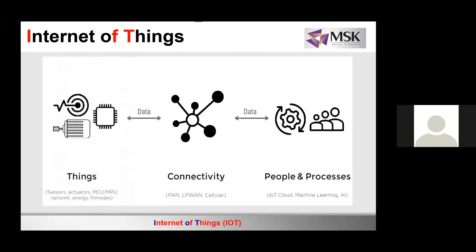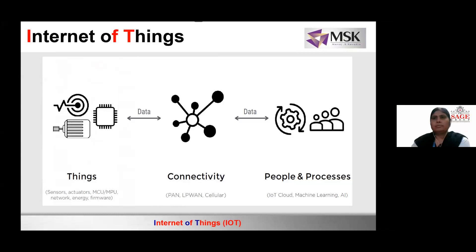There are things, there should be connectivity, and there should be some people or process. It's not only that it should work with people — it can work with software, it can work with machines, it can work with apps, anything. That is what is IoT.